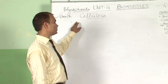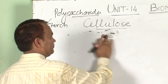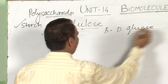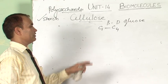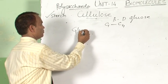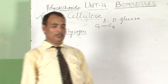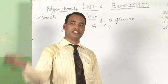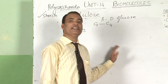The next polysaccharide is cellulose. The monomer of cellulose is beta-D-glucose, with a C1–C4 linkage. It is a straight chain with no branching, and the linkage is known as beta-glycosidic linkage. Glycogen is also known as animal starch. Excess glucose in the human body is stored in the liver as glycogen, and when energy is needed, glycogen is converted back to glucose. Structurally, glycogen is similar to starch but is highly branched.